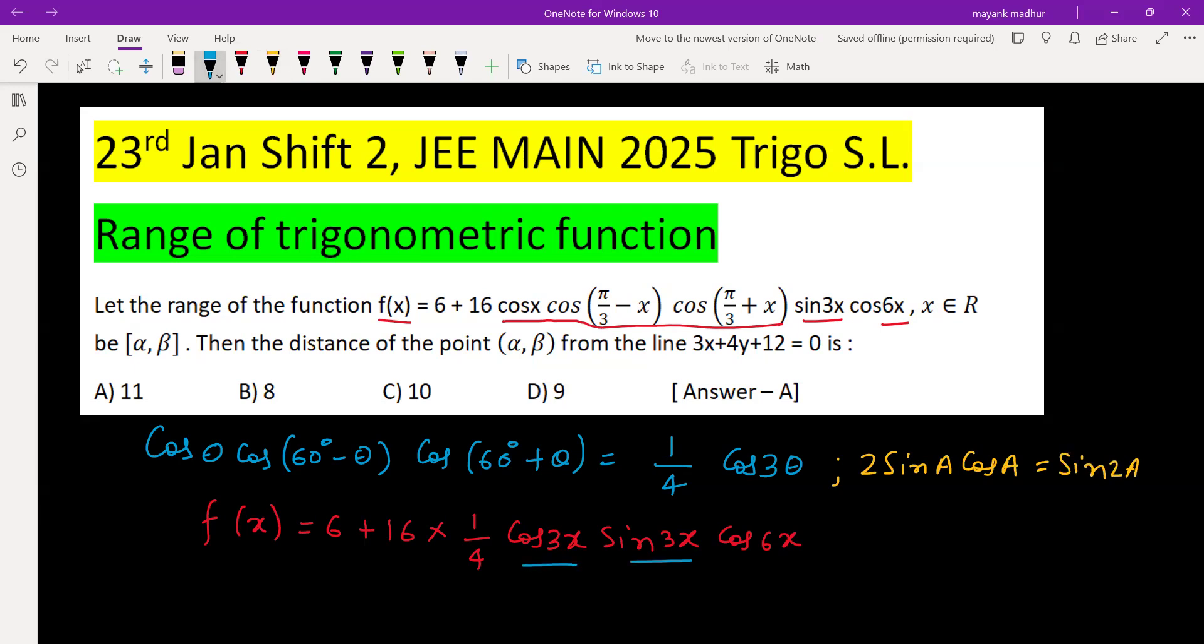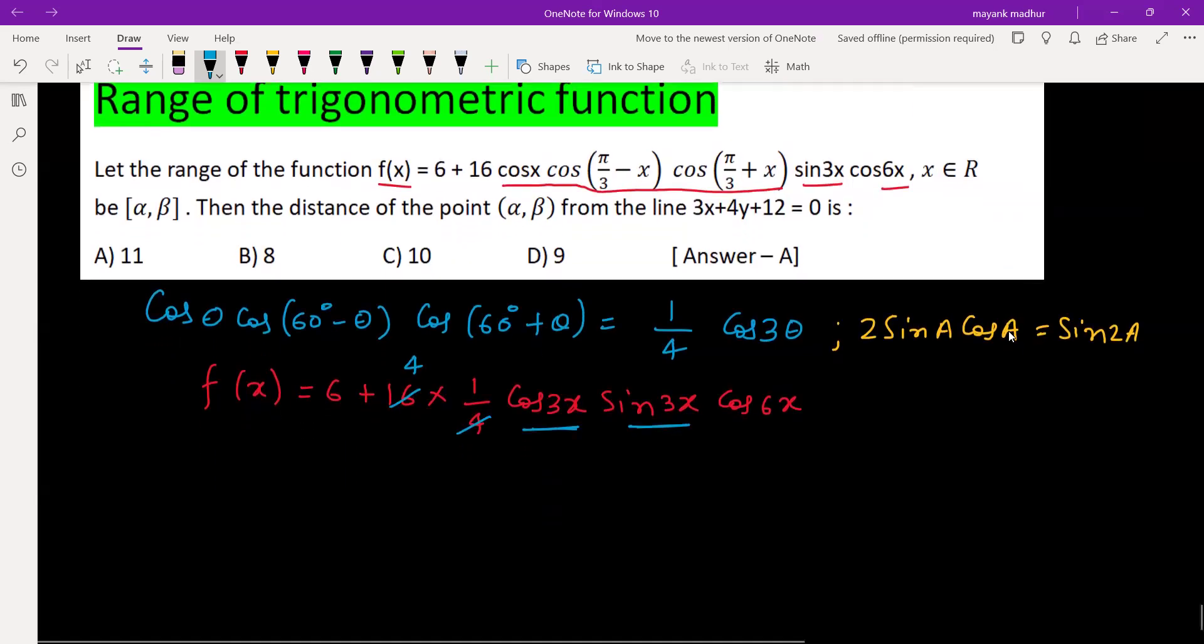We can first cancel, so we will be clubbing this cos 3x and sin 3x. It will give us 2, we can borrow from here, so we'll be left with 2 cos 6x from here, and from here we will have sin 6x. So let's use this 2 sin a cos a one more time.